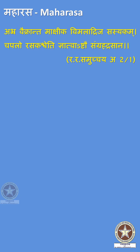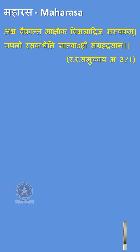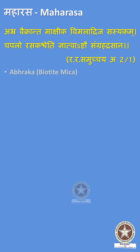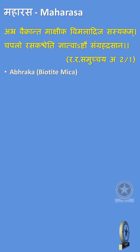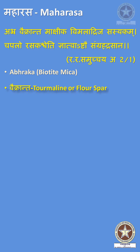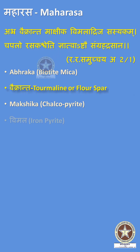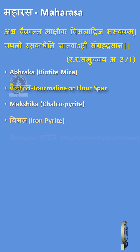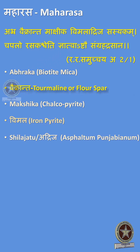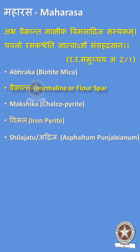There are 8 drugs mentioned under the category of Maharasahs. They are Abra (that is Abraka, Biotite Mica), Vaikaranta (Turmaline or Fluorspar), Markshika (Copper Pyrite), Vimala (Iron Pyrite), and Shilajitu or Adrijab, which can be taken as Asphaltum Punjabi Enam.